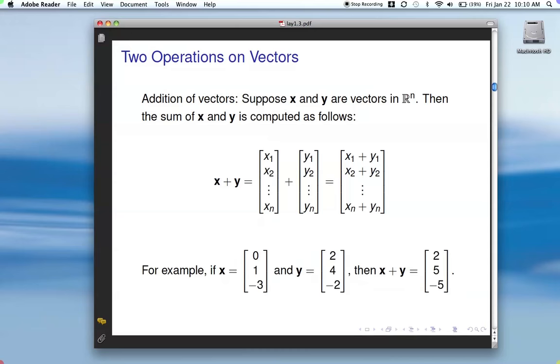So for example, if here's x and here's y, to get their sum, 0 plus 2 gives you the 2 here. 1 plus 4, 5. And negative 3 plus negative 2 gives you the negative 5.